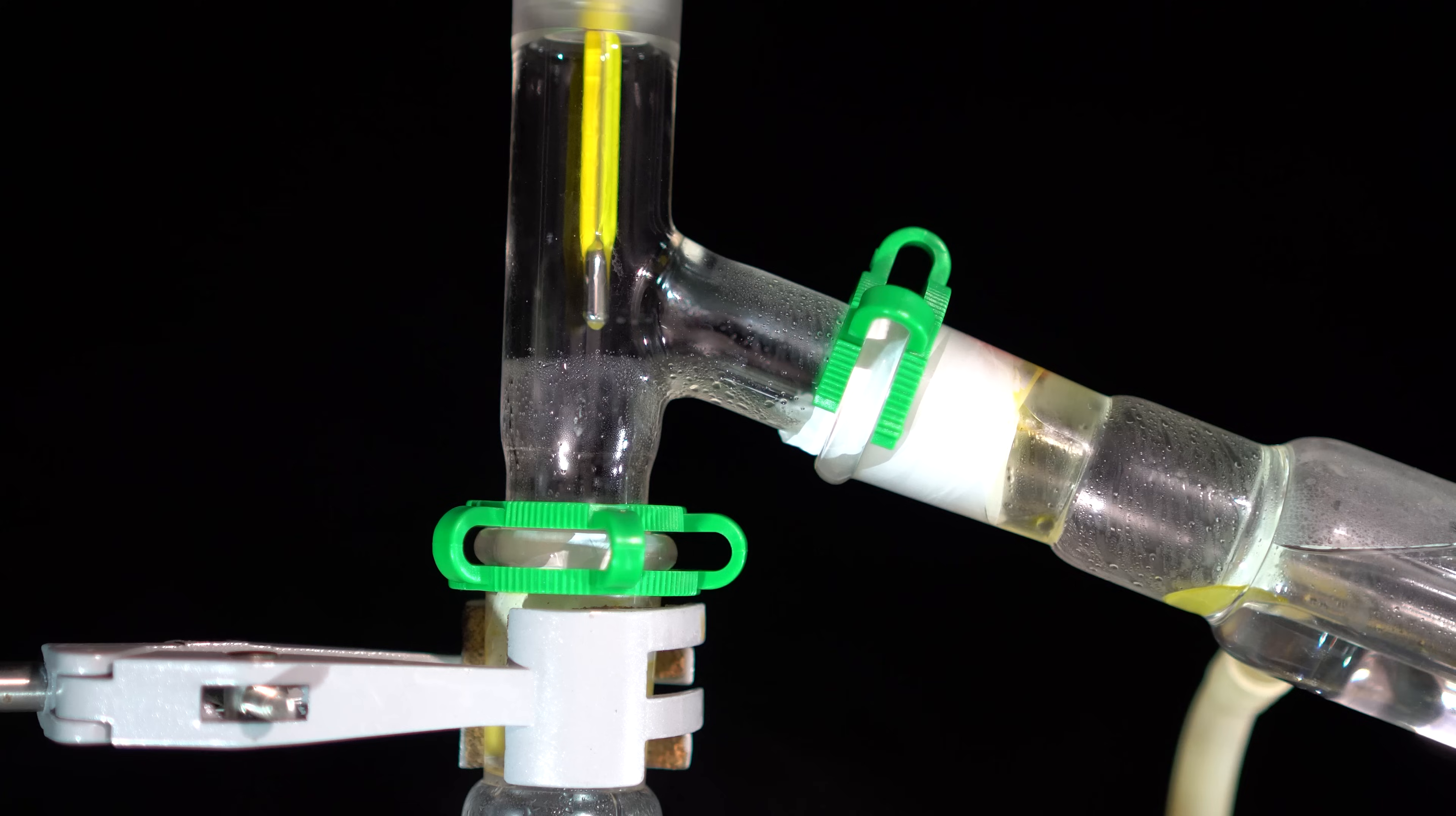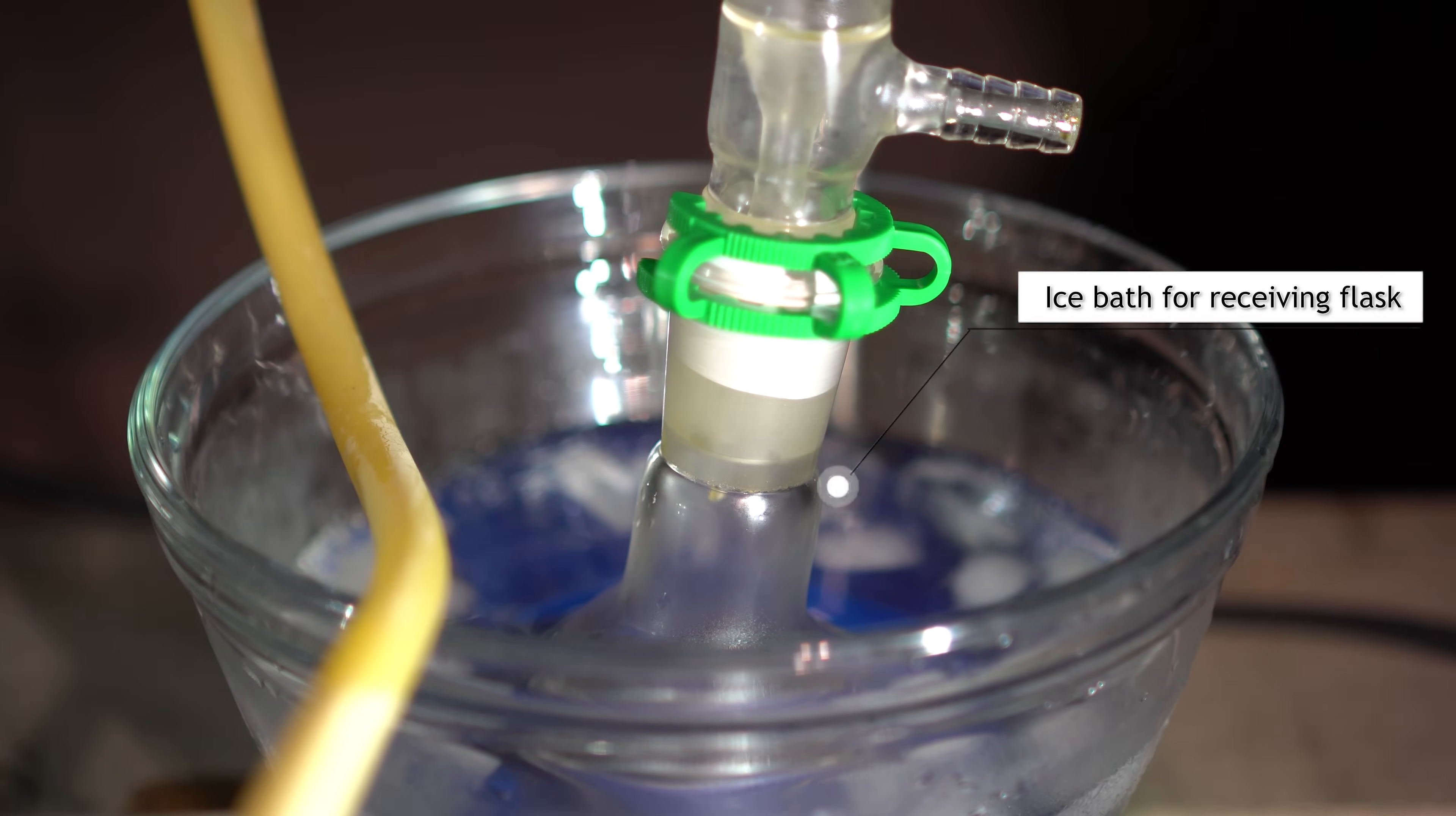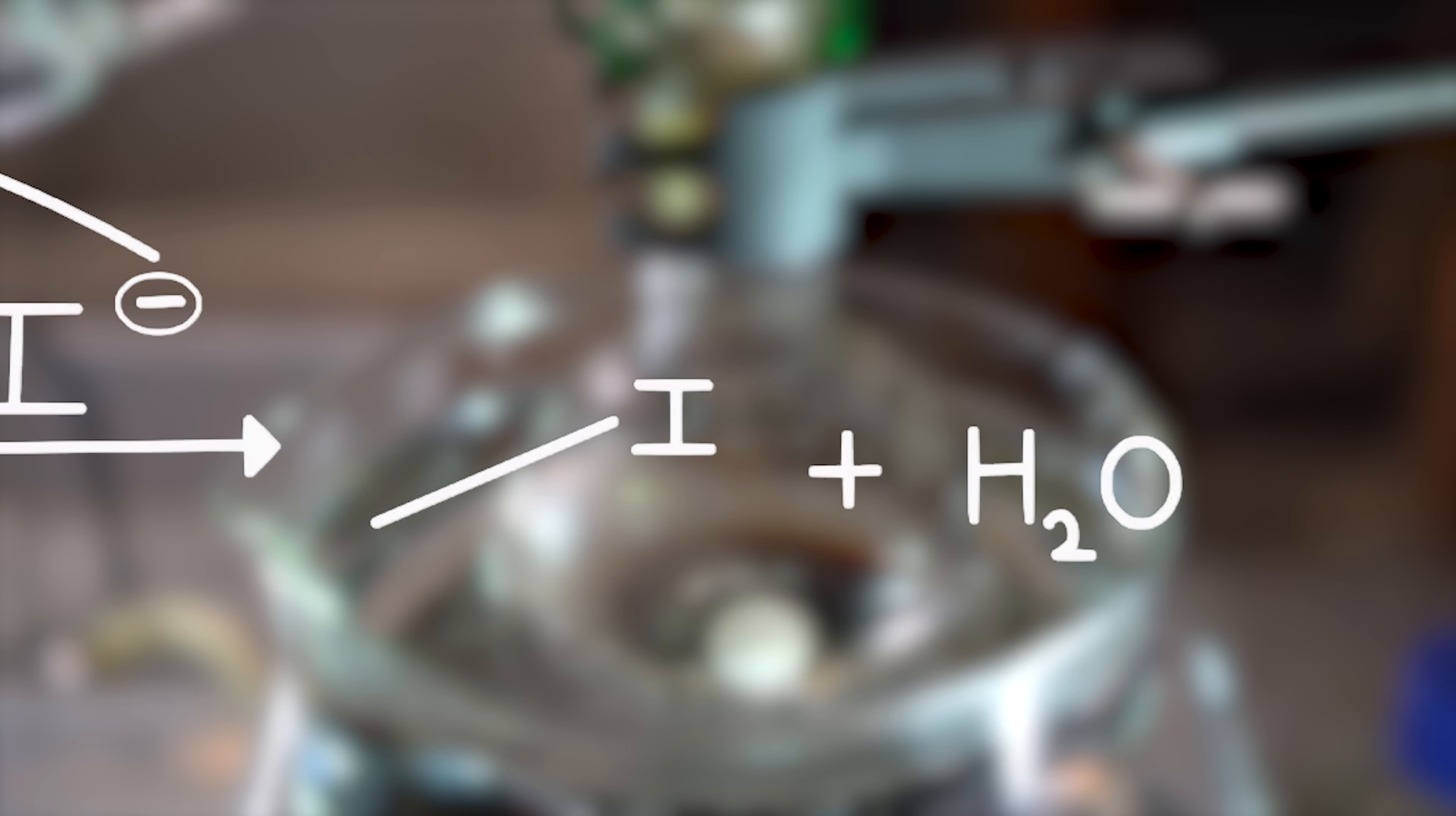Iodomethane has a boiling point of 42 degrees Celsius, and it should come over around that. Though, what's actually happening in this reaction? Let's dive into the beautiful world of chemistry. In this reaction, the function of the acid is to produce a protonated alcohol. The halide ion then displaces a molecule of water, which is a good leaving group from carbon. This produces an alkyl halide. In our case, iodomethane is formed. Primary alcohols and methanol react to form alkyl halides under acidic conditions by the SN2 mechanism.